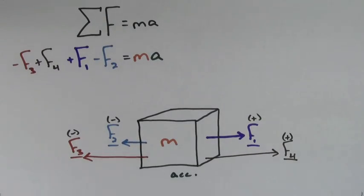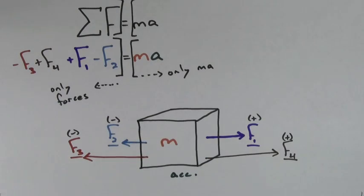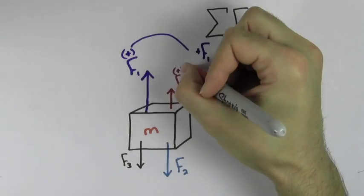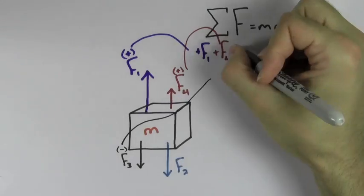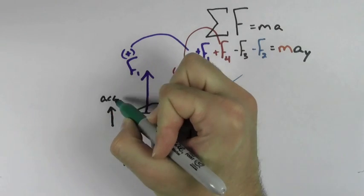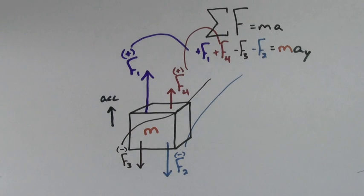Keep in mind, only forces go on the left-hand side of the equation, and the only thing that should go on the right-hand side is M times A. This equation works just as well for vertical forces. Make the upwards forces positive since they point in the positive direction, and make the downwards forces negative since they point in the negative direction. Set it equal to MA and you can solve for the unknown variable. Keep in mind that the A in this case is the acceleration in the vertical direction, since you included vertical forces.